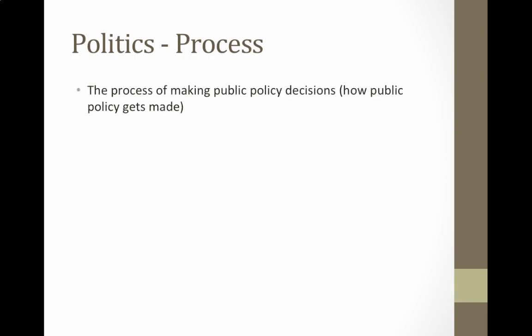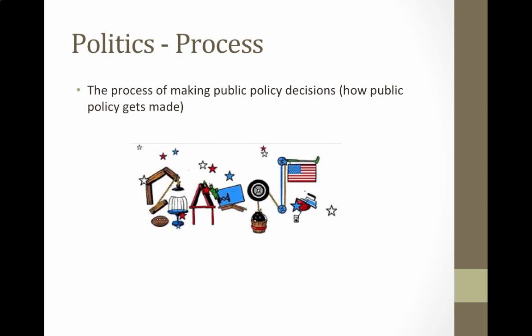Government is the maker and their product is public policy. Politics is the process they go through — it's how the policies get made. It is a complicated, ugly, slow, and frustrating process. If you watch the news at all, you'll know that nothing gets accomplished very quickly because people have all kinds of different opinions. I've compared it to a Rube Goldberg machine — like the mousetrap game where you create these complicated processes to get to the final product. That's what politics is.